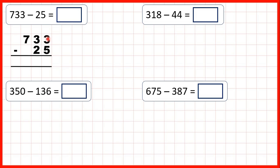We have 3 minus 5, but 5 is larger than 3, so we need to exchange with the place value to the left — our tens digit. So because 5 is larger than 3, we go to the left, 1 less, 1 in front. So now we have 13 minus 5, which is 8.